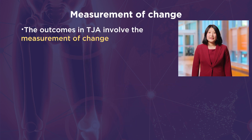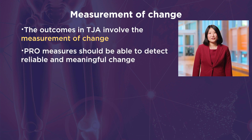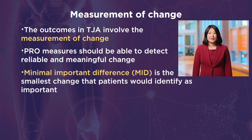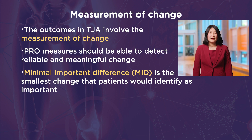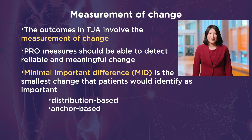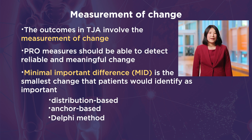The outcomes in arthroplasty typically involve the measurement of change. This requires PRO measures to detect reliable and meaningful change. Minimal important difference, or MID, also called minimal clinically important difference, or MCID, is the smallest change in a treatment outcome that patients would identify as important. The MID can be derived using three different methods: distribution-based, anchor-based, or the Delphi methods. It serves as an interpretive threshold above which an individual's change is deemed relevant or important. The most popular anchor-based methods use patients' self-reported evaluation of change. When there is no credible anchor-based MID value, researchers may use a distribution-based method, often presenting a range of MID estimates based on standard deviations. MID estimates can vary depending on samples and methods used.